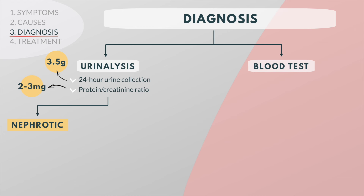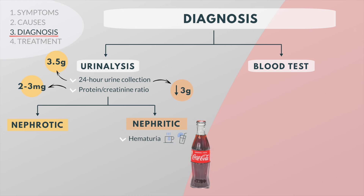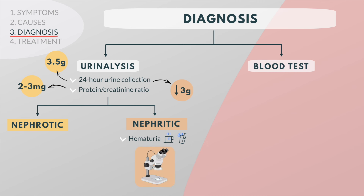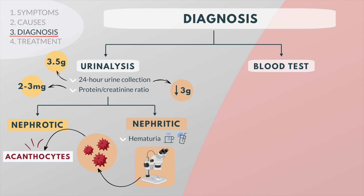Urinary protein excretion varies widely in glomerulonephritis but is generally less than 3 grams of protein per day. Patients with glomerulonephritis may also present with macroscopic hematuria, often described as tea or cola-coloured urine. Microscopic urine examination will reveal red blood cells that are classically dysmorphic as a result of the stress they incur as they pass through the nephron. These are called acanthocytes and are indicative of a glomerular cause of hematuria.